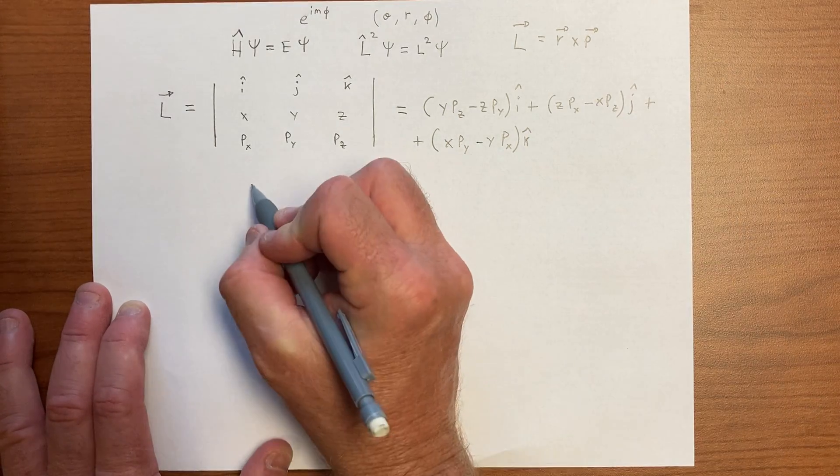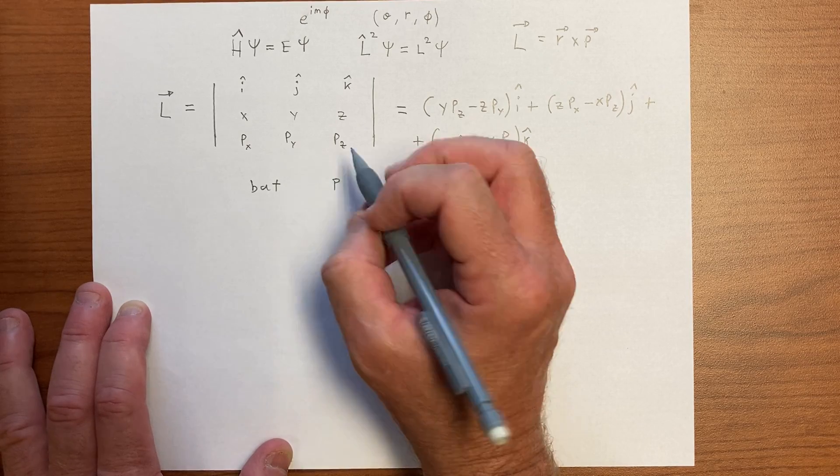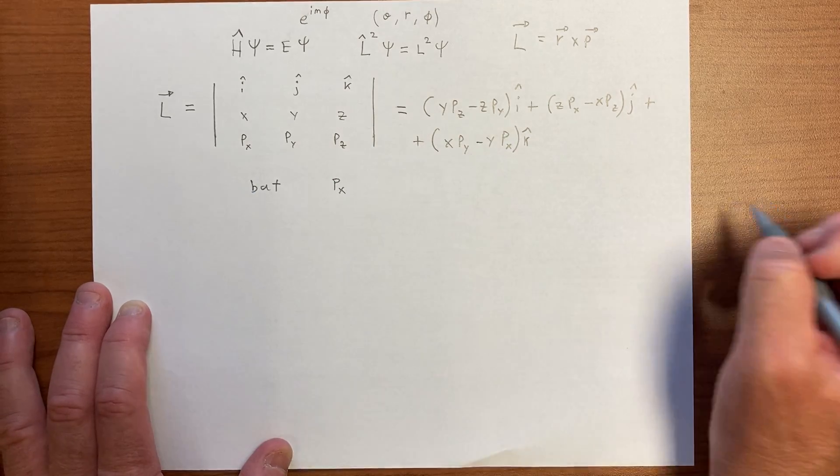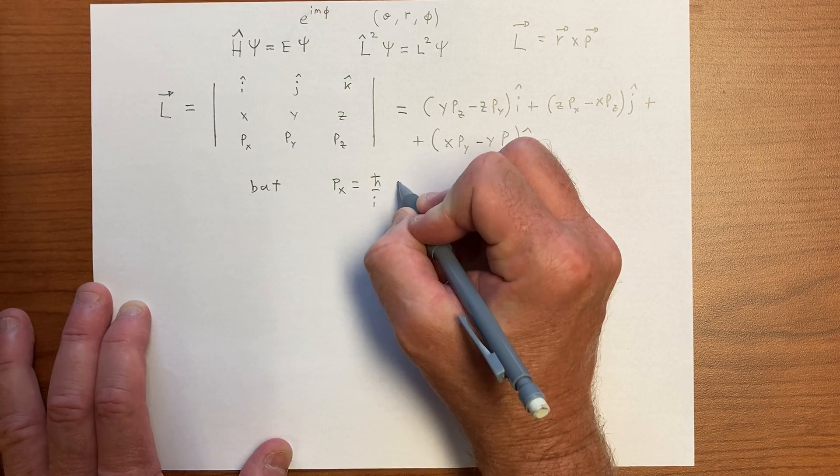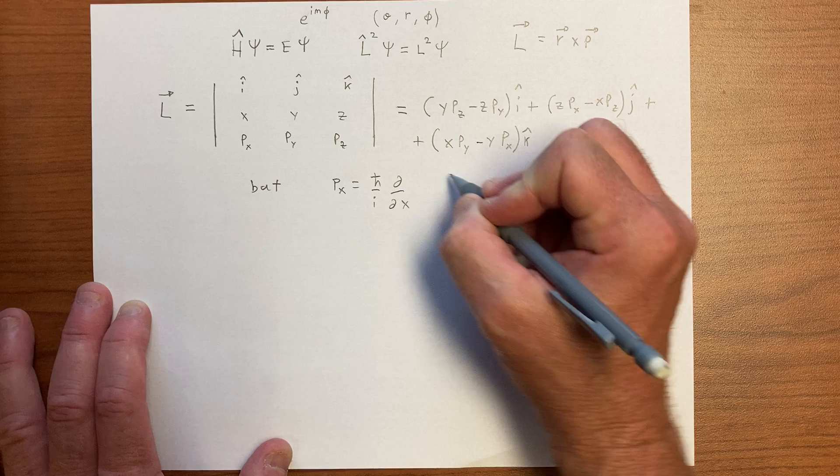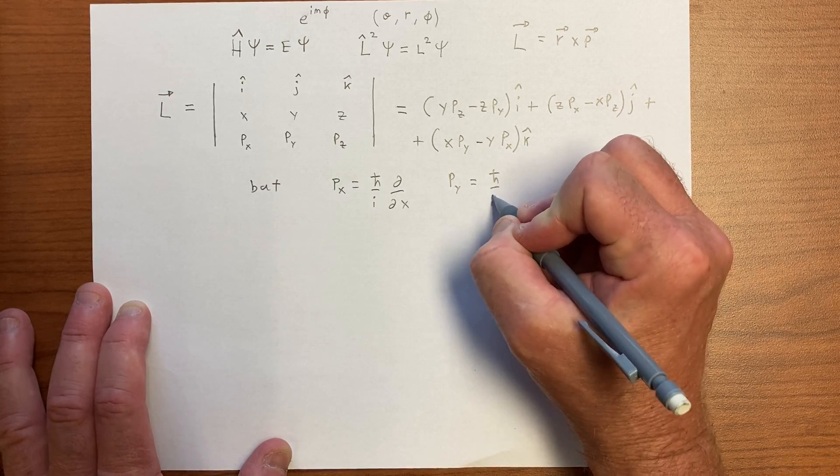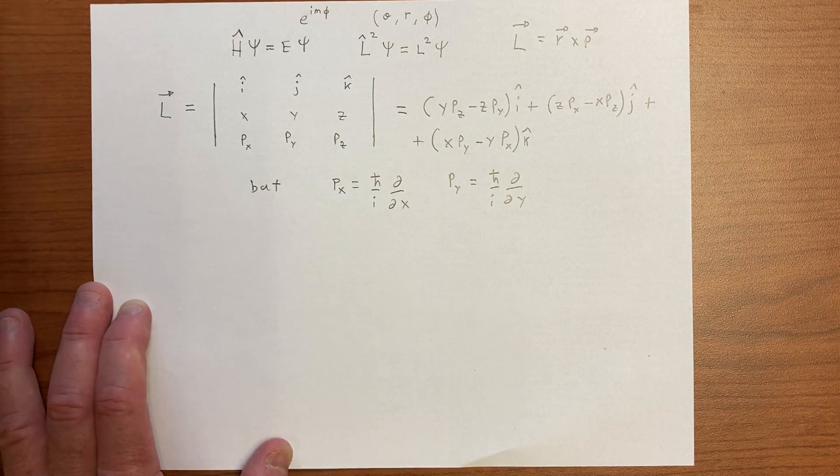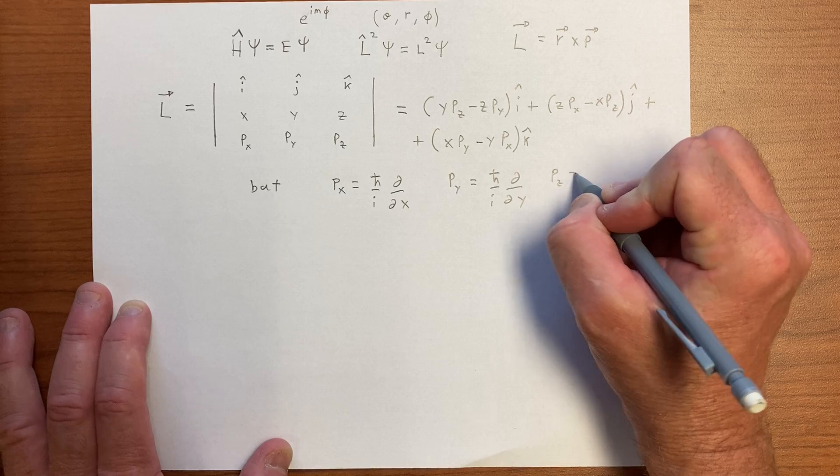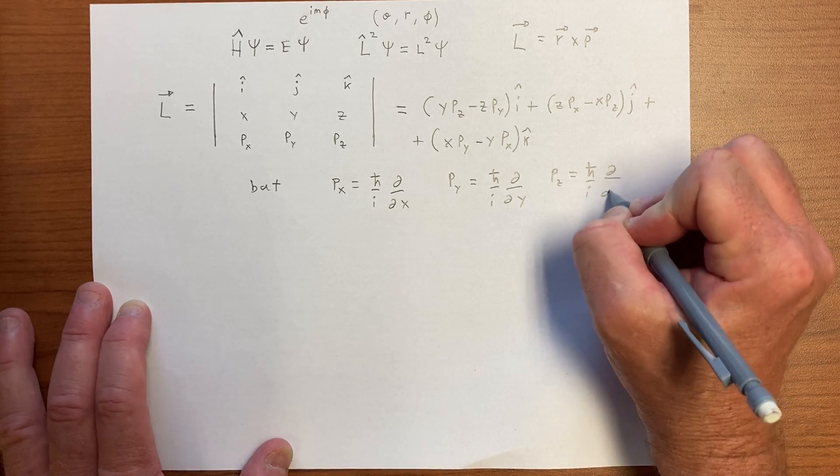But we know, of course, that the momentum, the momenta are operators, so p_x is equal to h bar over i d by dx, p_y is h bar over i d by dy, and similarly, p_z is h bar over i d by dz.